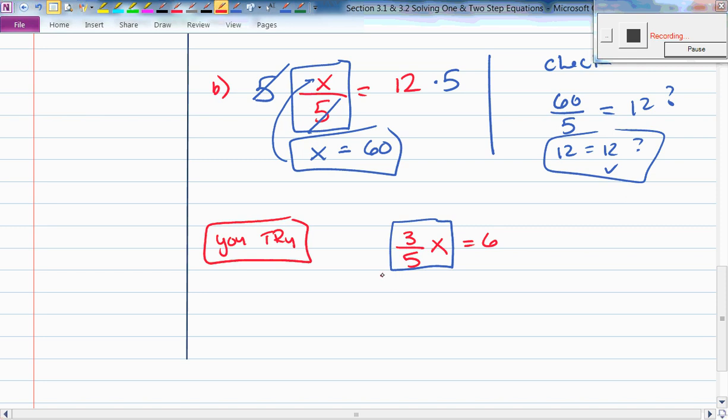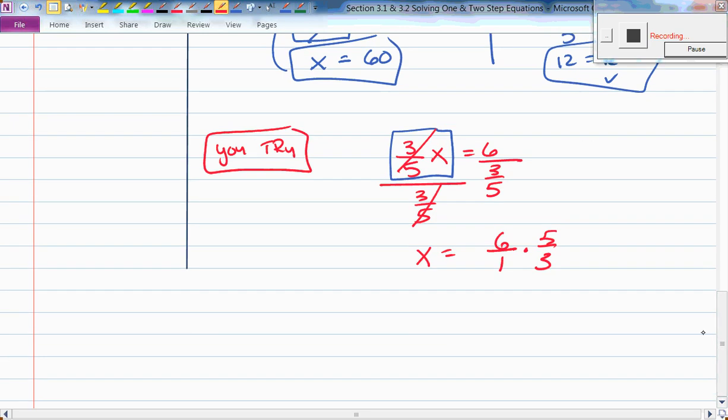If we say that we're going to divide by 3 fifths, that means I'm going to divide by 3 fifths. You with me so far? So that means x equals 6 divided by 1 times 5 thirds. Who can tell me what I just do there and why? I took the reciprocal. Yes. Why did I take the reciprocal?